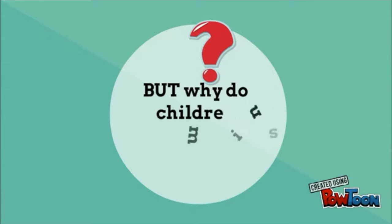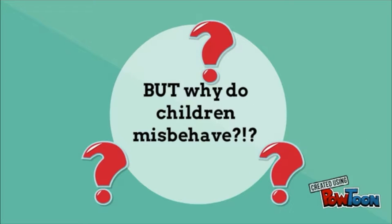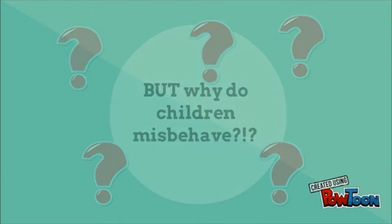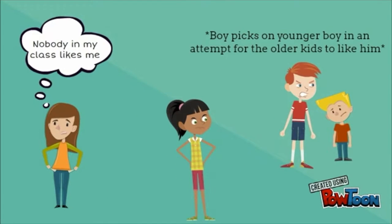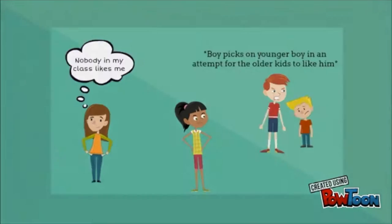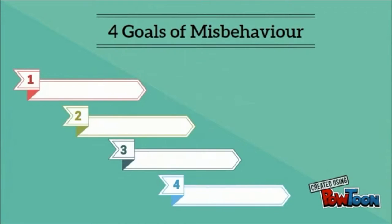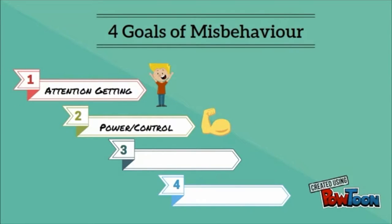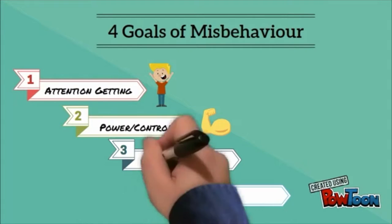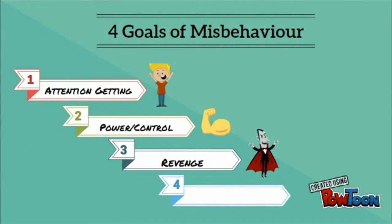But why do children misbehave? Misbehavior is the result of not being accepted. All misbehavior is the result of a child's mistaken assumption about how to belong and gain status. Dreikers proposed four types of misbehavior: attention getting, power and control, revenge, and helplessness/inadequacy.